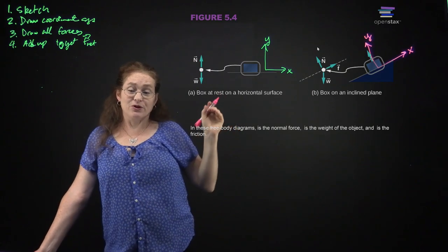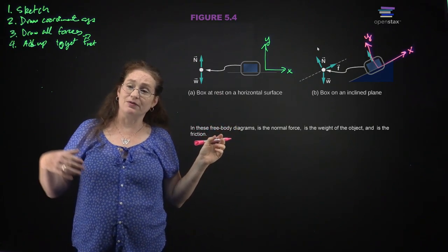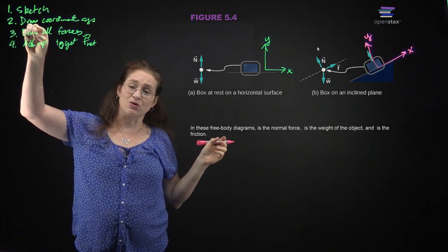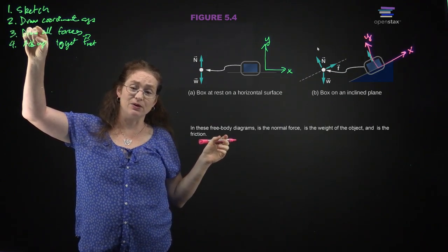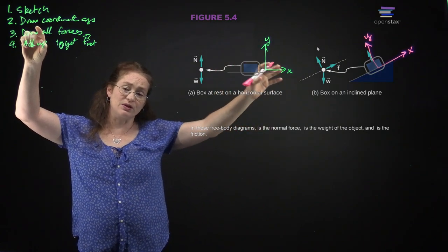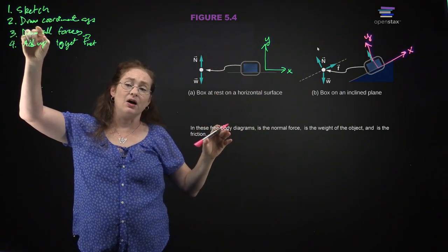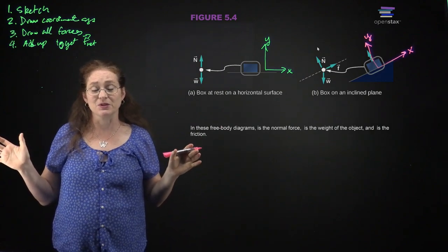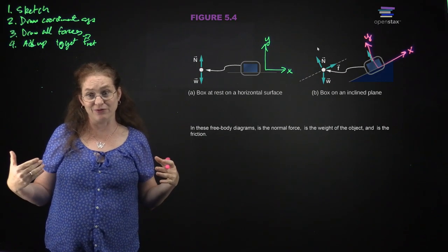I could arbitrarily choose x going down or up the plane; the basic math is the same except for a sign. This is why drawing your coordinate system first is really important — a clever choice simplifies everything.